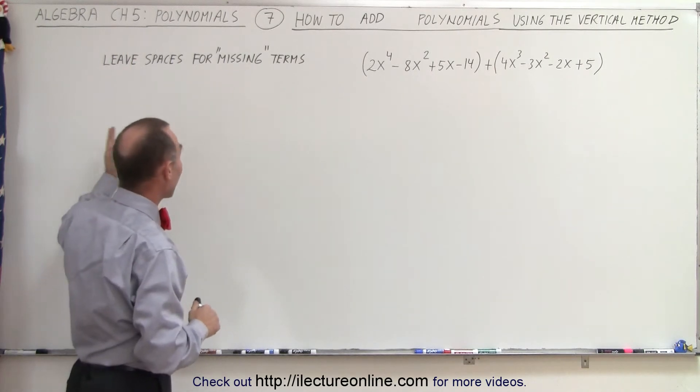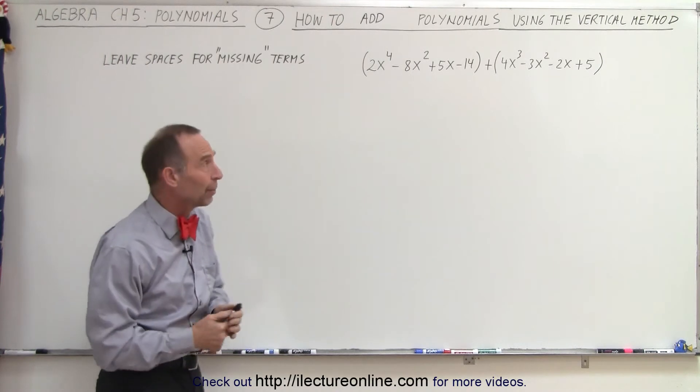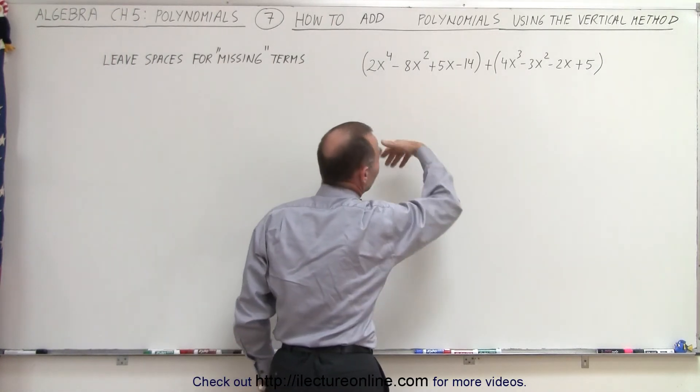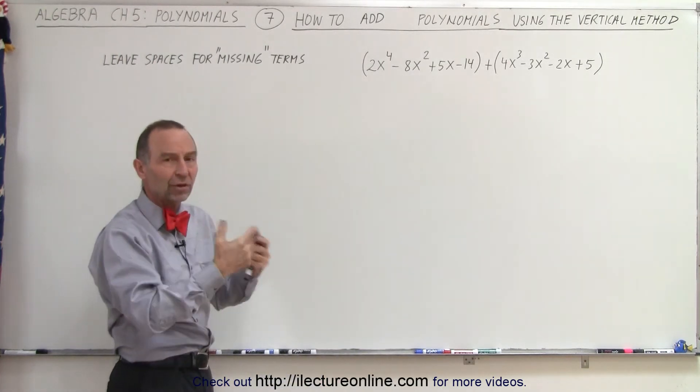So, we're starting with the higher term powers, and we leave spaces for any missing terms. For example, notice on the left here, the first polynomial doesn't have an x to the third term. It doesn't have a third order term, so we leave space there as if there was one.